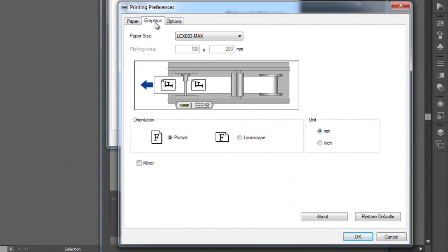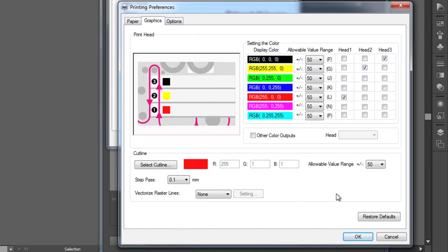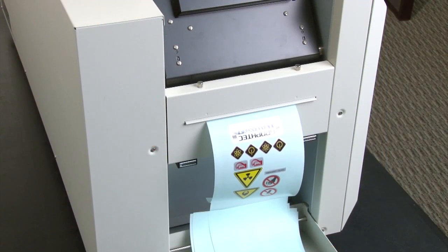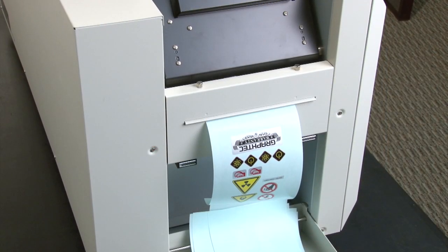This tab, the graphics tab, is where you decide the color configuration as well as the cut path color assignment. From there, you can simply print and the LCX603 will take it from there.